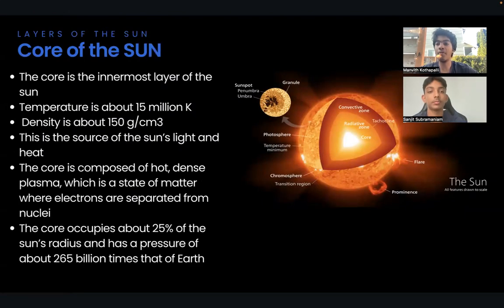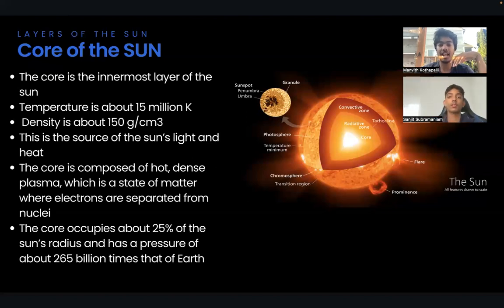First, let's talk about the innermost layer of the Sun, the core. The core is the innermost layer of the Sun, where the temperature is about 15 million Kelvin, and the density is about 150 grams per centimeter cubed.